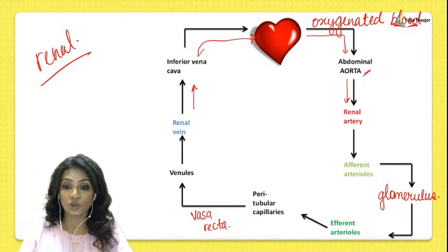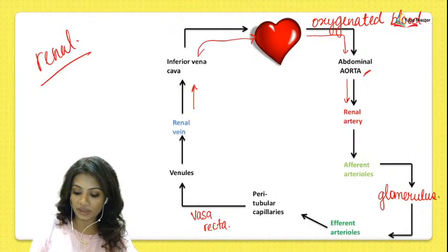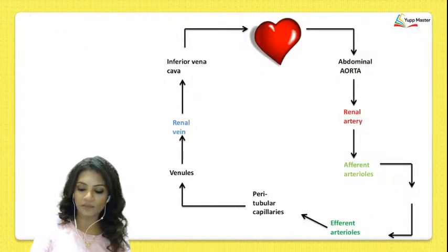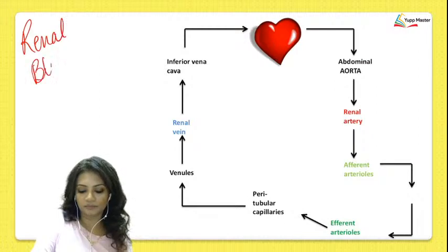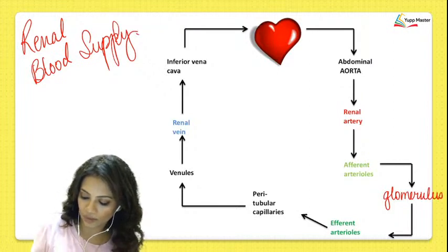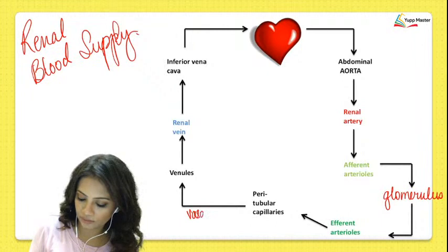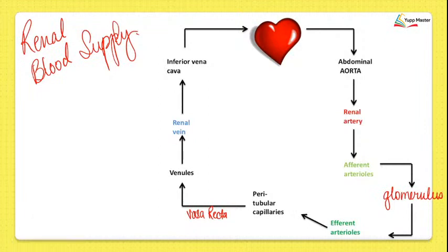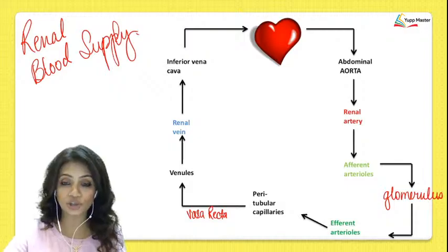This whole chain — from heart through the renal artery, glomerulus, efferent arteriole, peritubular capillaries, Vasa recta, renal vein, and back to the heart — is called the renal blood supply. You can take a screenshot of this diagram to keep notes.